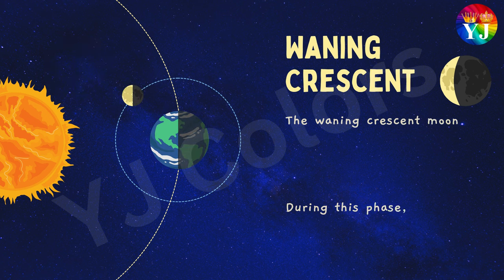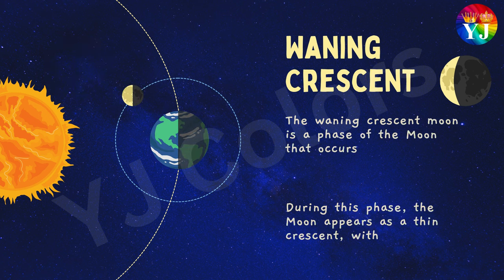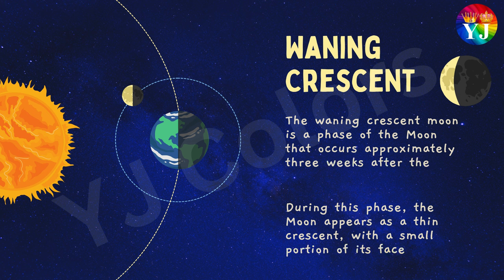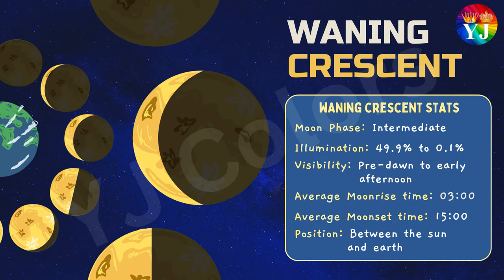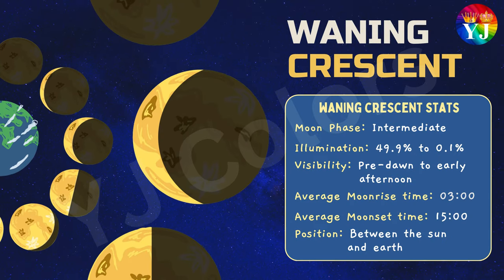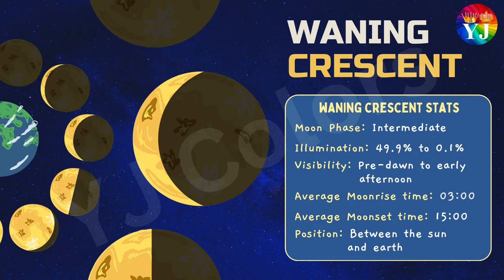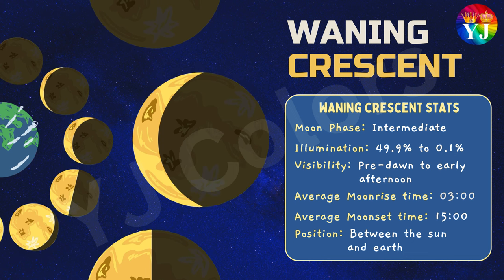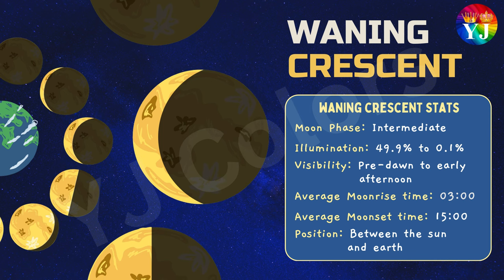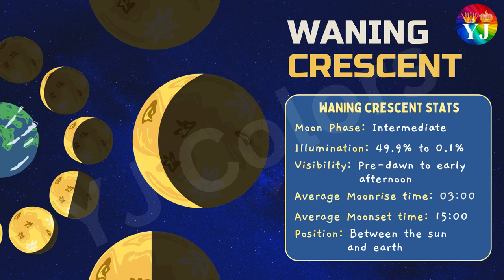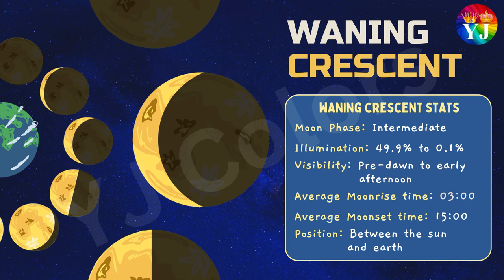Waning Crescent: The Waning Crescent Moon is a phase of the Moon that occurs approximately three weeks after the full moon phase. During this phase, the Moon appears as a thin crescent with a small portion of its face illuminated by sunlight. Statistics: Moon Phase — Intermediate; Illumination — 49.9% to 0.1%; Visibility — predawn to early afternoon; Average Moonrise and Moonset Time — 3 a.m. to 3 p.m.; Position — between the Sun and Earth.